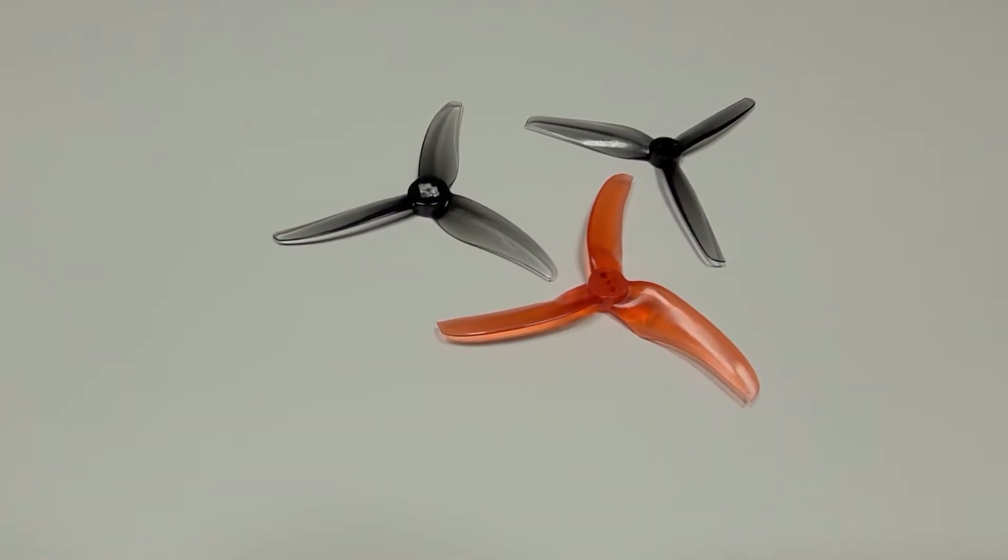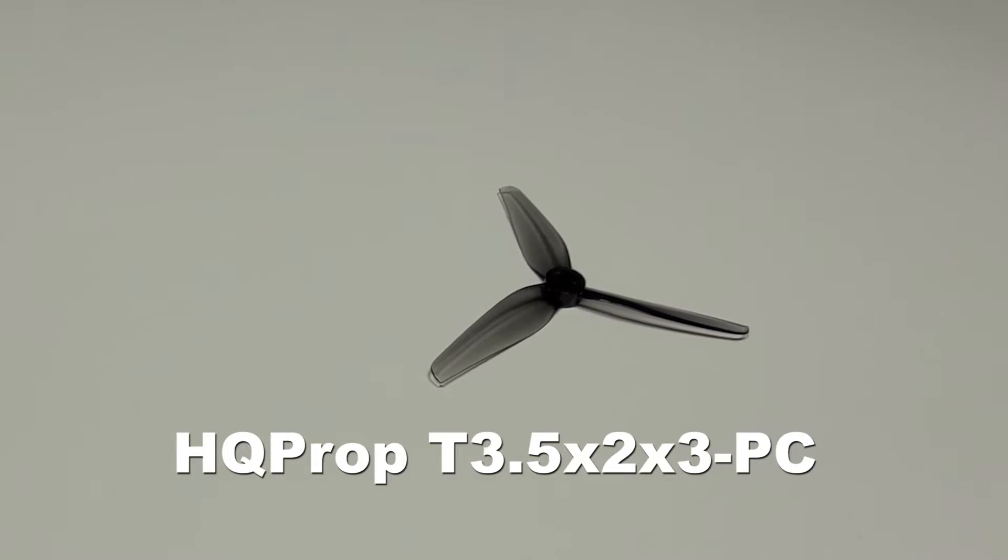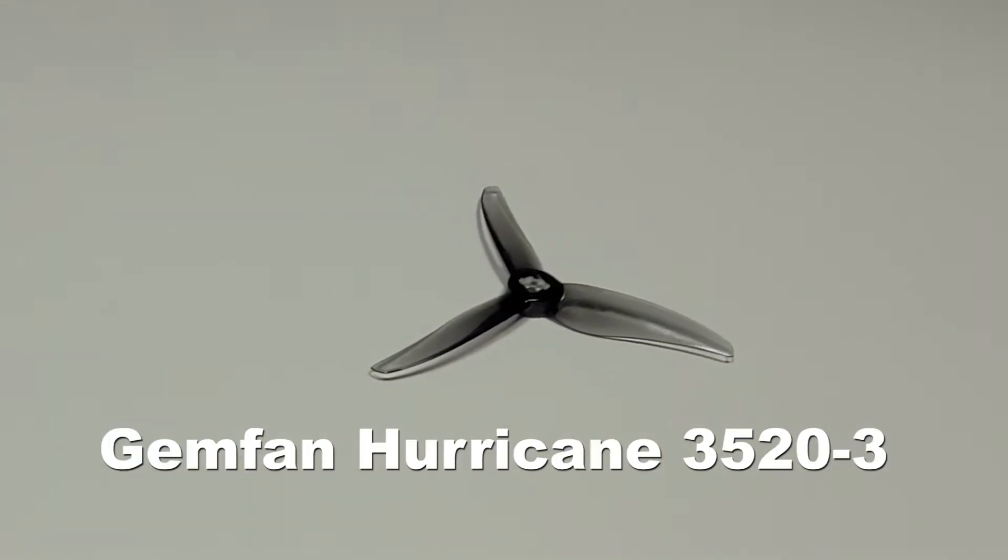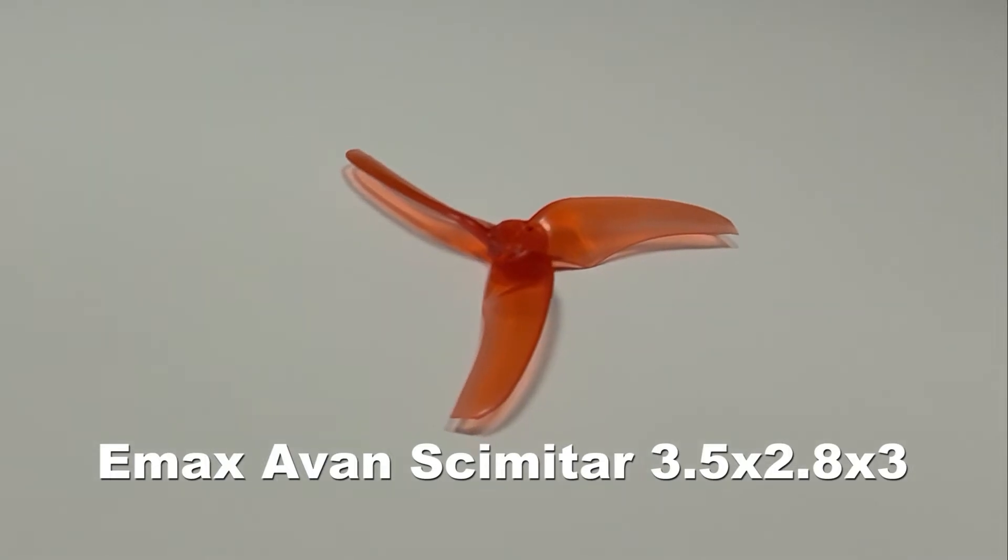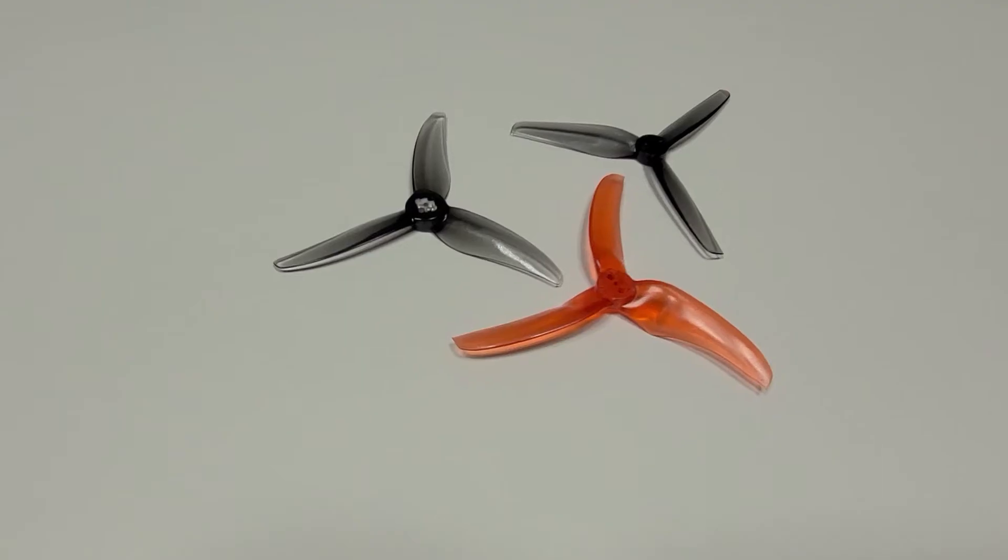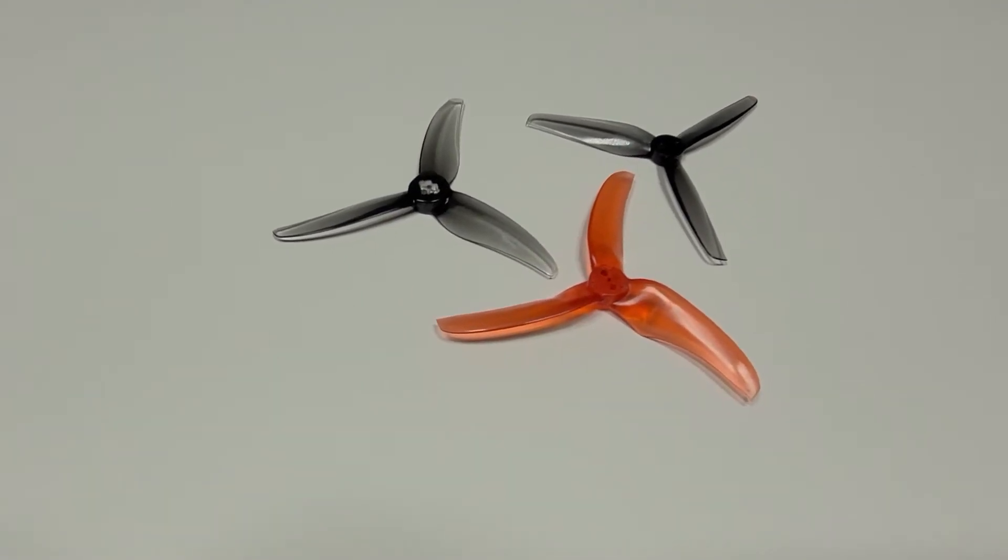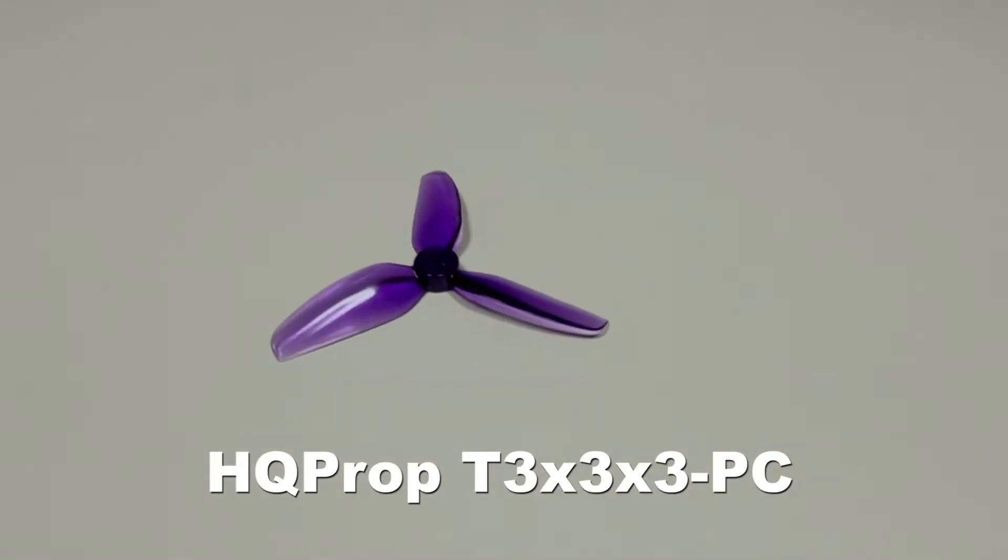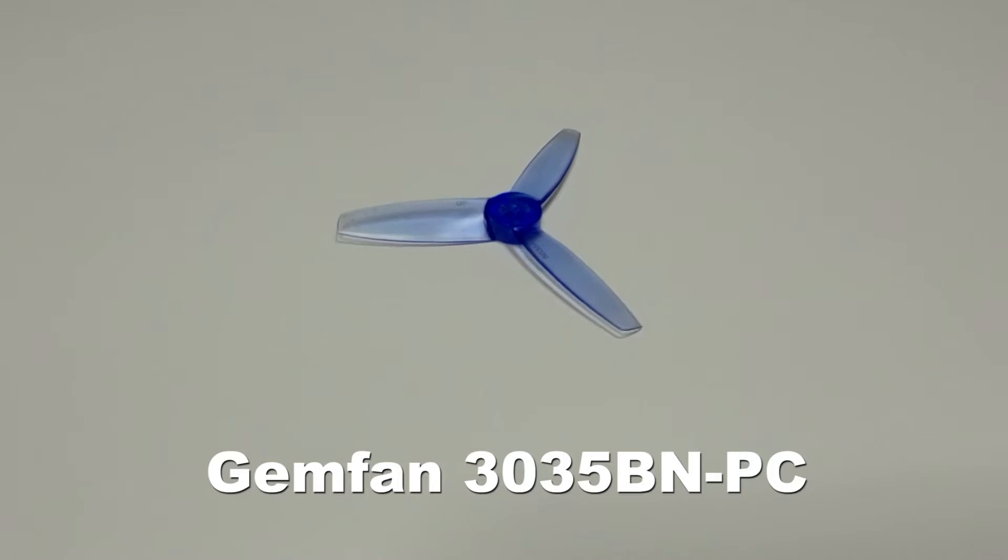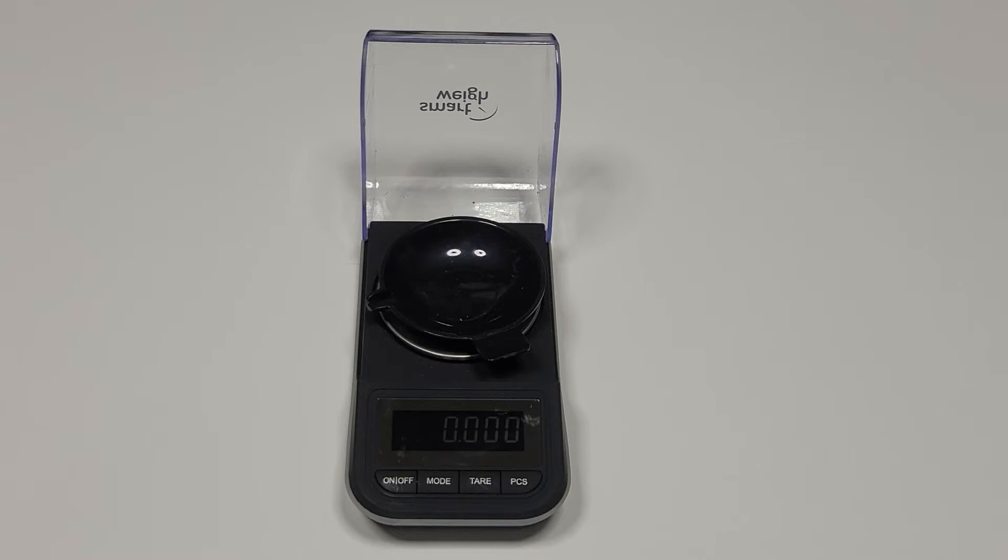The 3.5-inch propellers being tested today are HQ Prop 3-Blade 2-inch Pitch Propellers, Gemfan Hurricane 3-Blade 2-inch Pitch Propellers, Emax Avan Scimitar 3-Blade 2.8-inch Pitch Propellers. In addition to each other, these propellers will be compared against a 3-inch HQ Prop 3-Blade 3-inch Pitch Propeller, representing the current 3-inch performance leader, and a 3-inch Gemfan 3-Blade 3.5-inch Pitch Propeller, representing the current 3-inch efficiency leader.